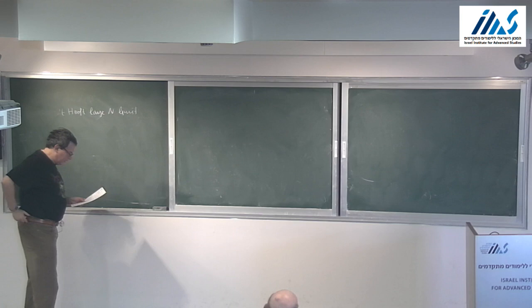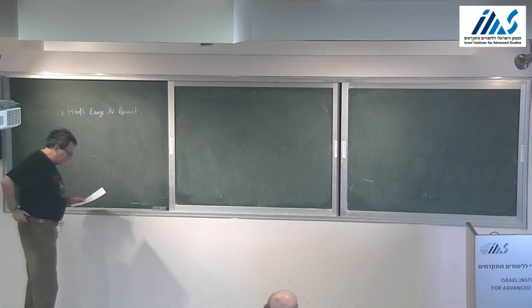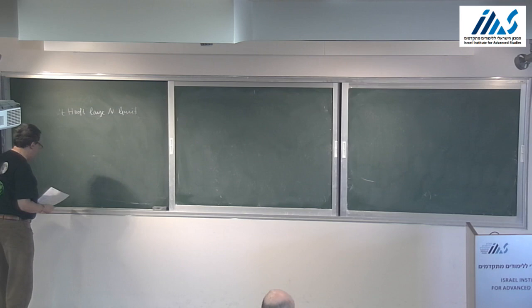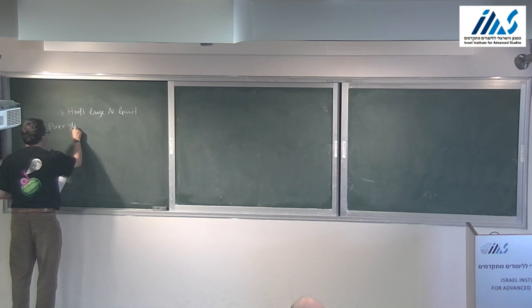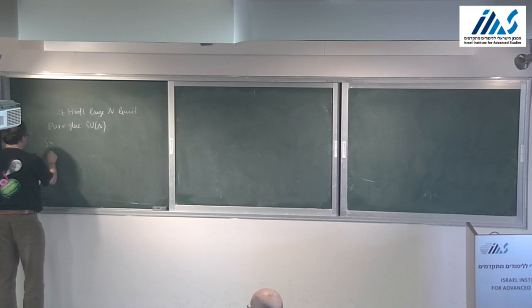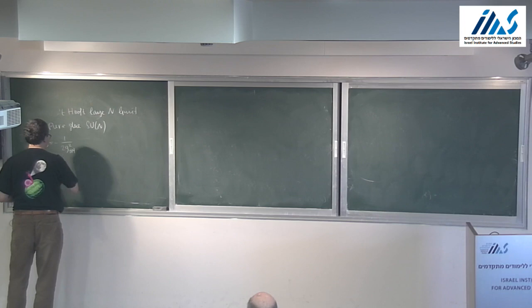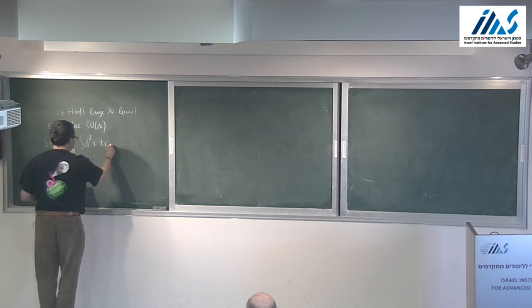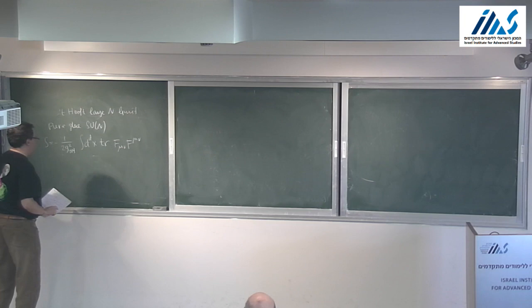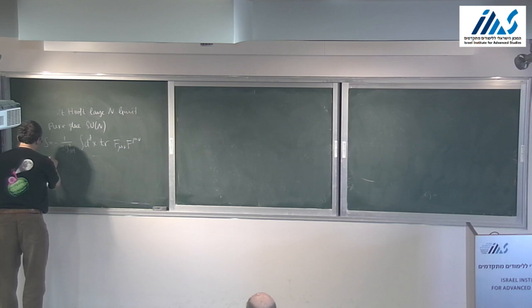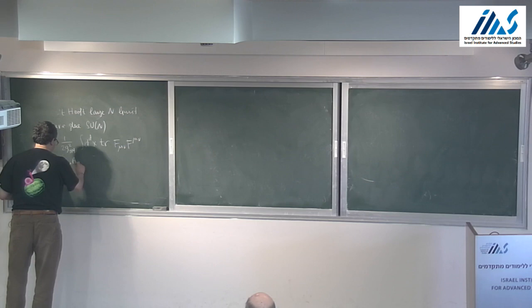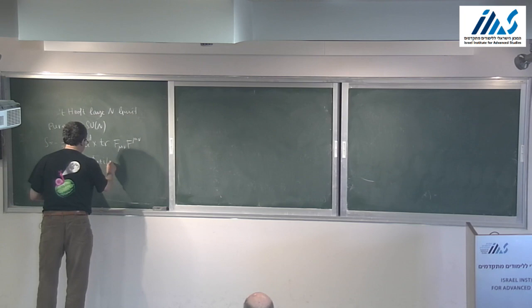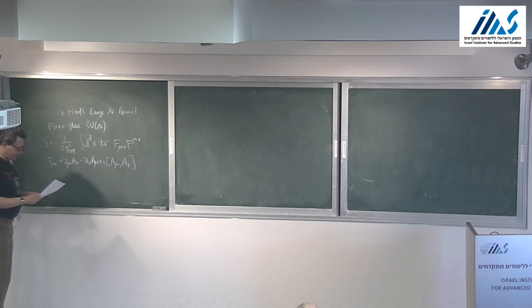The large-N limit was invented shortly after the invention of QCD. The golden formula: the pure-glue SU(N) gauge theory has the action S = −(1/2g_{YM}²) ∫ d^d x tr(F_{μν}²), in conventions where 1/g_{YM}² × N is out front. Here F_{μν} = ∂_μ A_ν − ∂_μ A_μ + i[A_μ, A_ν].